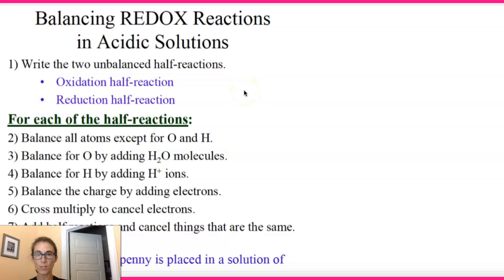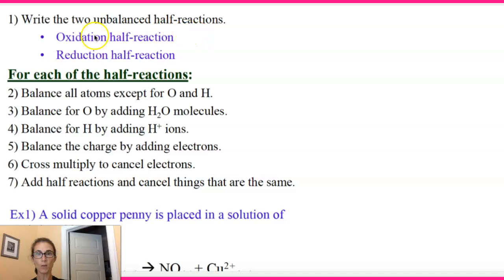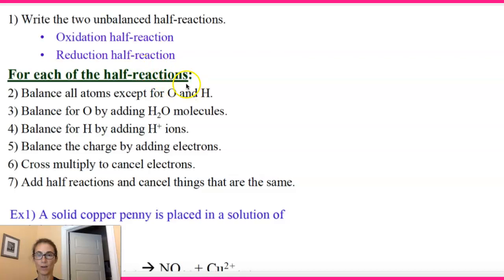So the first thing that you want to do — and I would definitely put these in your notes — is you want to write the two unbalanced half-reactions. You can even do two separate columns: oxidation half-reaction in one column and reduction half-reaction in the other, and then do each of these steps for both columns.